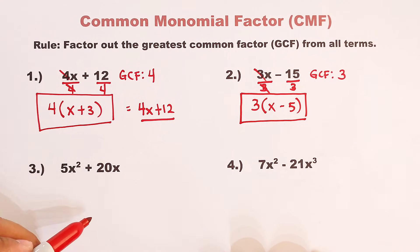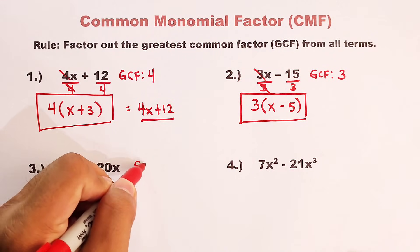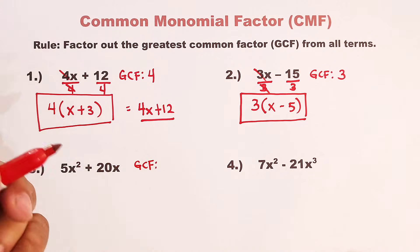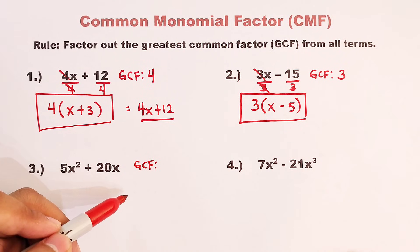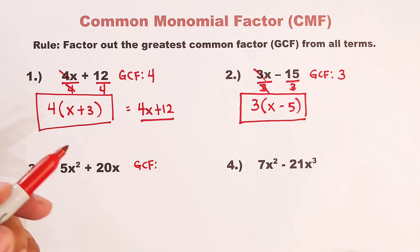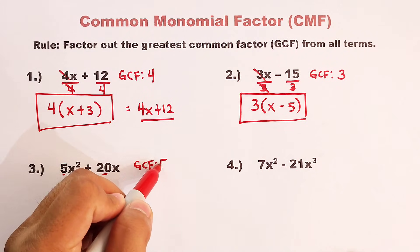Now, let's proceed with example number 3. We are given 5x squared plus 20x. Now, you can pause the view for a while and try to figure out and factor this one. Go. Okay, what do you think is the GCF between 5x squared and 20x? Let's go first with the numbers. Between 5 and 20, their GCF is definitely 5.